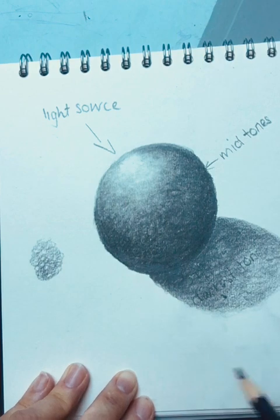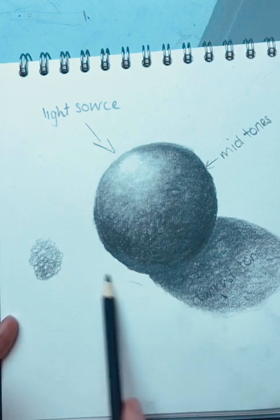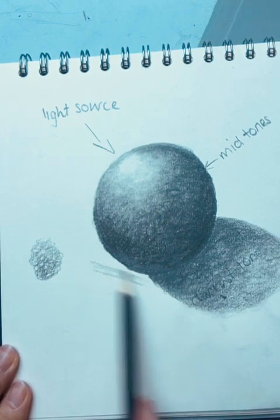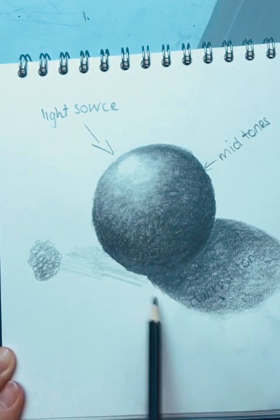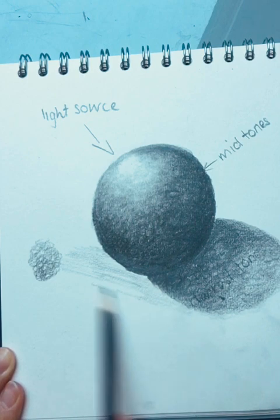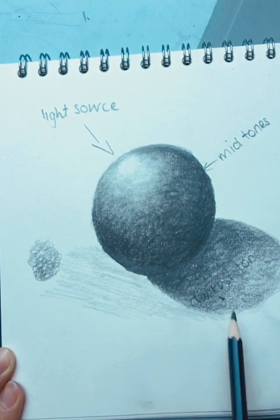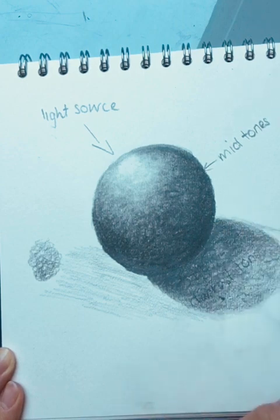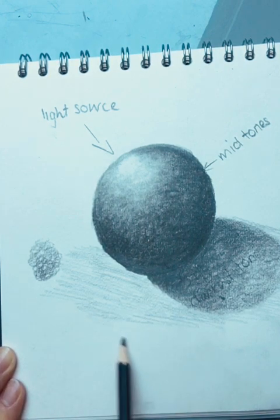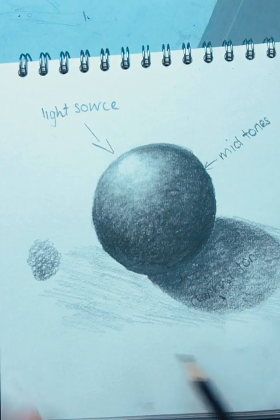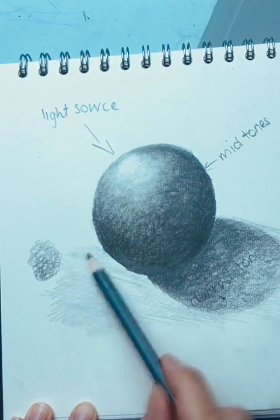All right, we're nearly done and then obviously to give it the effect of being sat on a table or the floor. Here we just put some shading on the outside areas to reflect this. Let's carry on. A little bit of cross-hatching here, add a little bit more tiny shading.